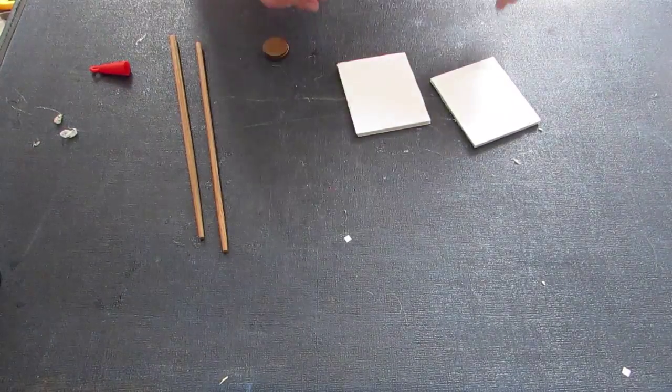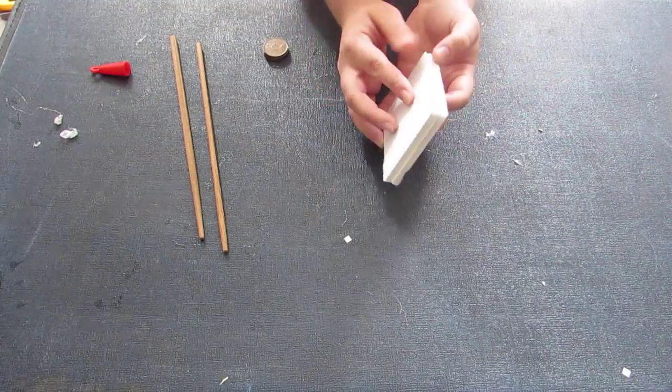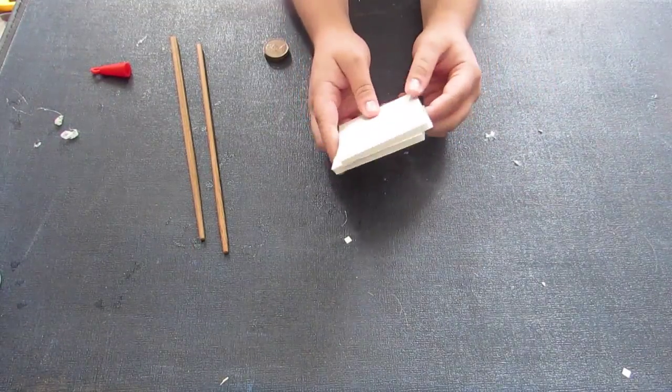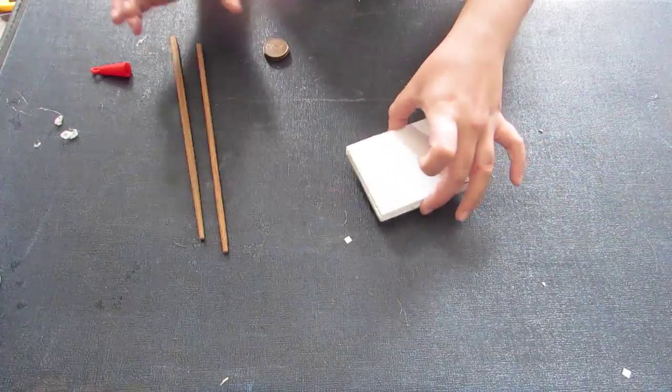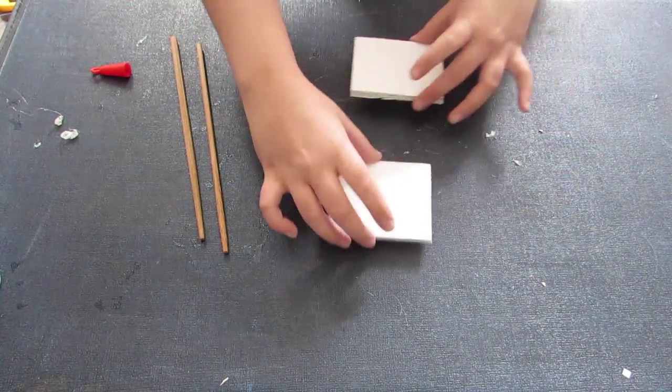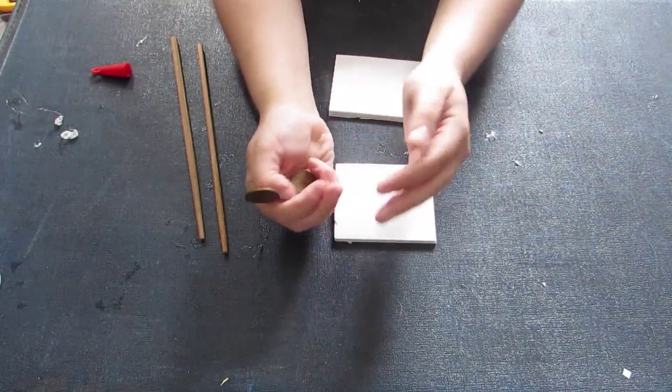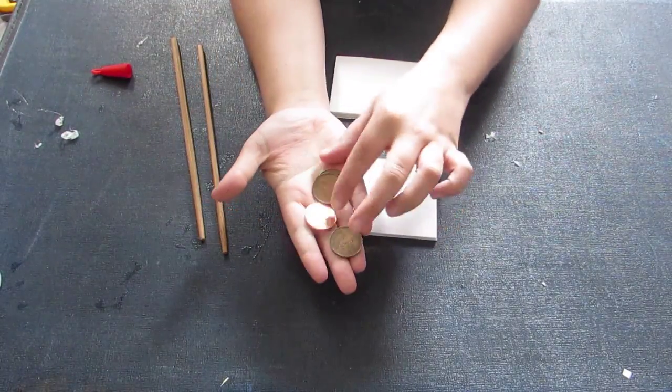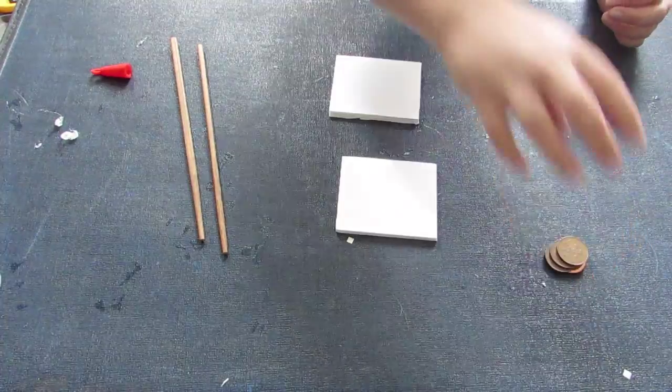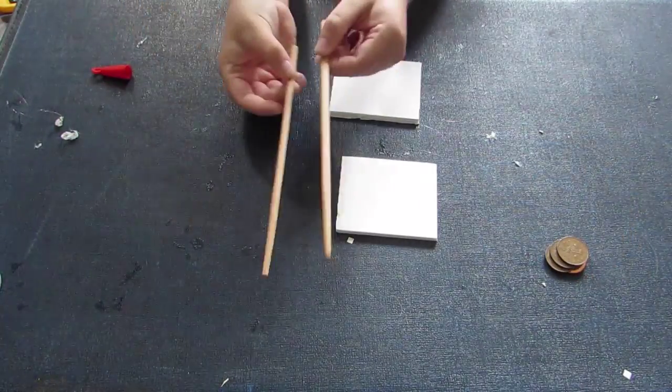Okay, so to make the stand you're going to want to get two small pieces of foam board. You want them to be the same size and however big you want the face of your stand to be is how big you want to cut them. You want to get two chopsticks, four two-pence coins or whatever is the same size in your currency, see how big they are in my hand there. And you want to get your glue gun.